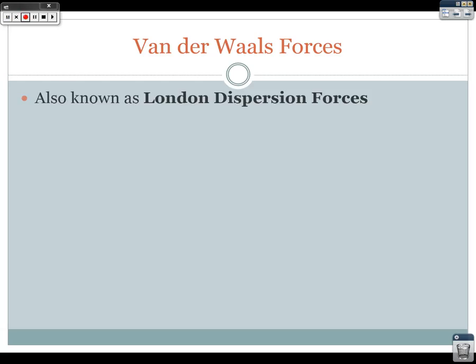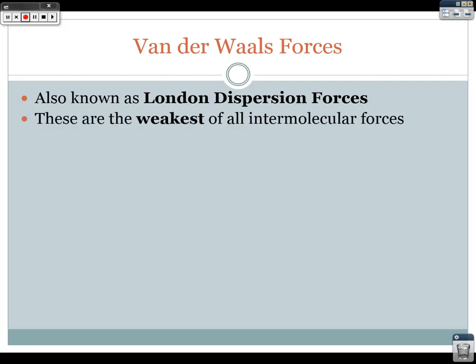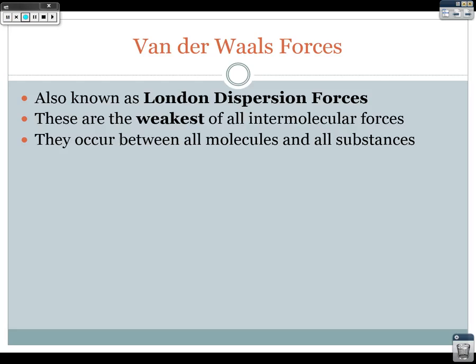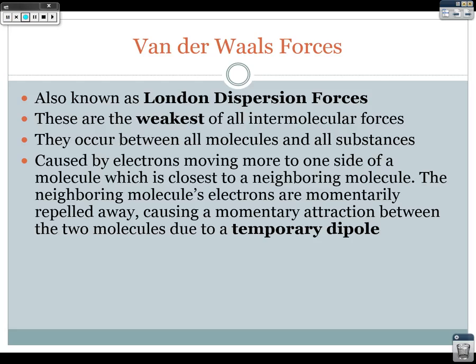Van der Waals forces, also known as London dispersion forces, are the weakest of all the intermolecular forces. They occur between all molecules and all substances — everything that exists has van der Waals forces attracting the molecules to each other. They are caused by electrons moving more to one side of a molecule closest to a neighboring molecule, and the neighboring molecule's electrons are then momentarily repelled away, causing a momentary attraction between the two molecules due to a temporary dipole.